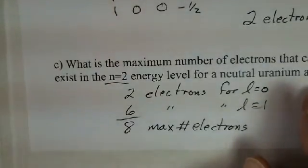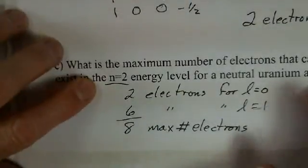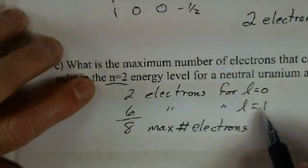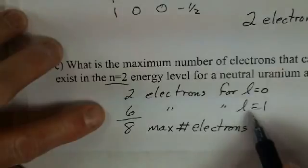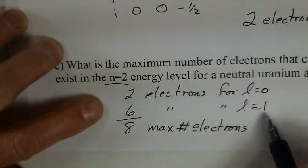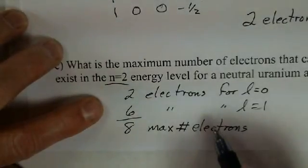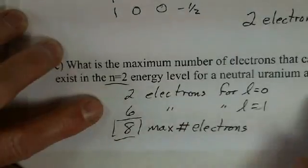That's uranium. What about copper? If I say n has to be 2, how many electrons would there be, maximum electrons, in the n equals 2 energy level for copper? Neutral copper. Same answer, eight. n equals 2, l can be 0 or 1. There's two electrons always and max in the l equals 0 state. There's always a maximum of six electrons in the l equals 1 state. So eight electrons, doesn't matter what element.